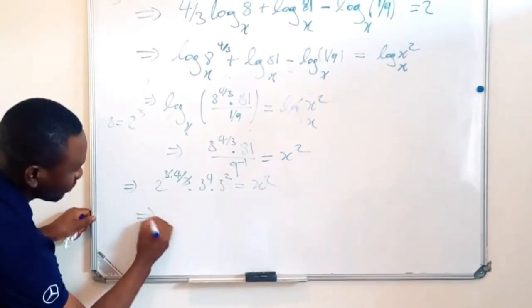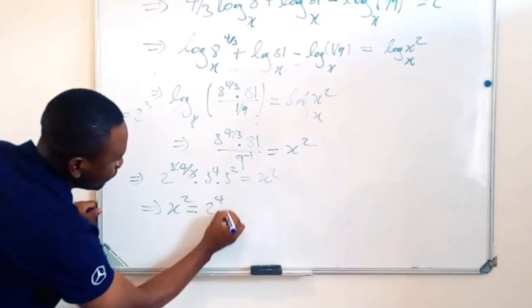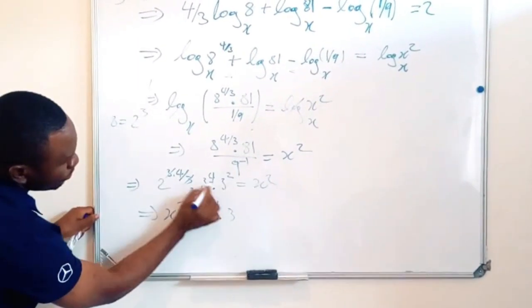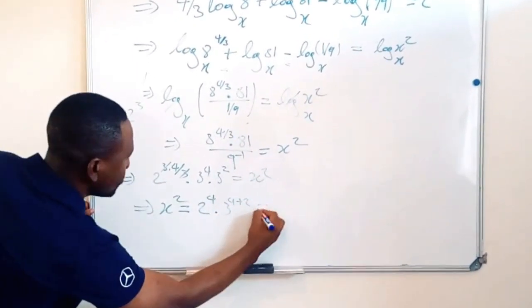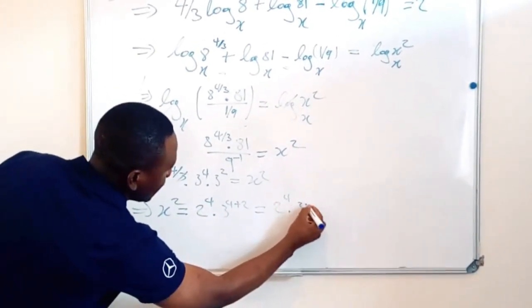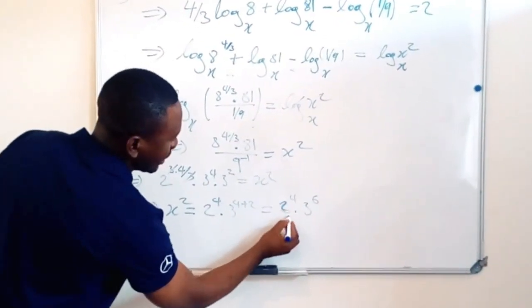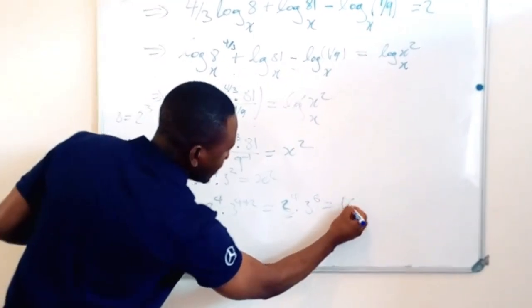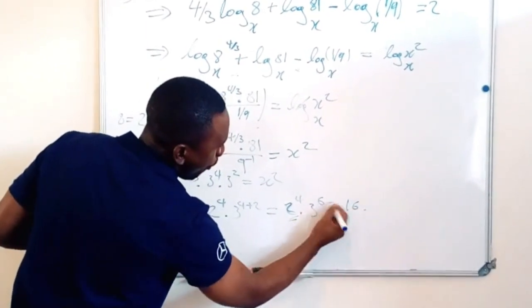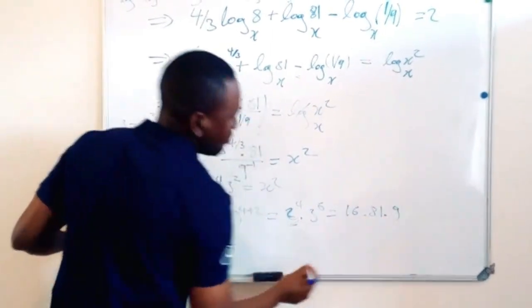So at the end, x squared is equal to 2 exponent 4 times 3 exponent 4 plus 2, which means I have 2 exponent 4 times 3 exponent 6. So here, we know that this one here is equal to 6, and that side, I'm going to have 81 times 9.